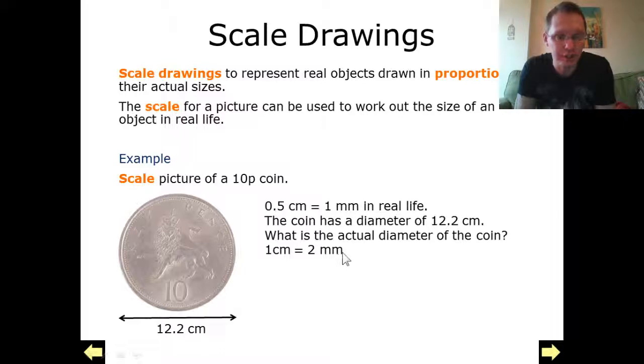1 cm equals 2 mm, which is what we've got from here, because if we double both of these, doubling half a centimetre is a centimetre, doubling 1 mm is 2 mm. This is just to make it easier for the calculations.